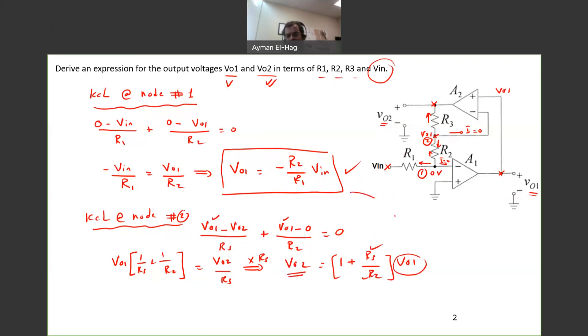So what I will do, I will just substitute the value here. That's as simple as that. So your VO2 is equal to 1 plus R3 over R2. Then remove VO1 and put its value, which is minus R2 over R1 times Vn. We can multiply this here. So this would equal to minus R2 over R1 and minus R3 over R1 times your Vn.